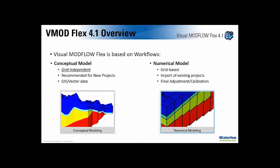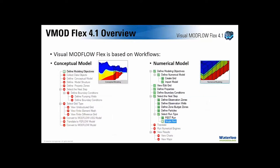Visual ModFlow Flex is based largely on workflows. There are two general workflows: the first is a conceptual model, which is grid-independent and recommended for new projects — it allows you to collect GIS and vector data, bring it into Flex, and build your model independent of your grid. You then work over into the numerical model, which is grid-based, recommended for importing existing projects and for final adjustment and calibration. The last step of the conceptual model links to the numerical model via a conversion process, after which you populate your numerical model.